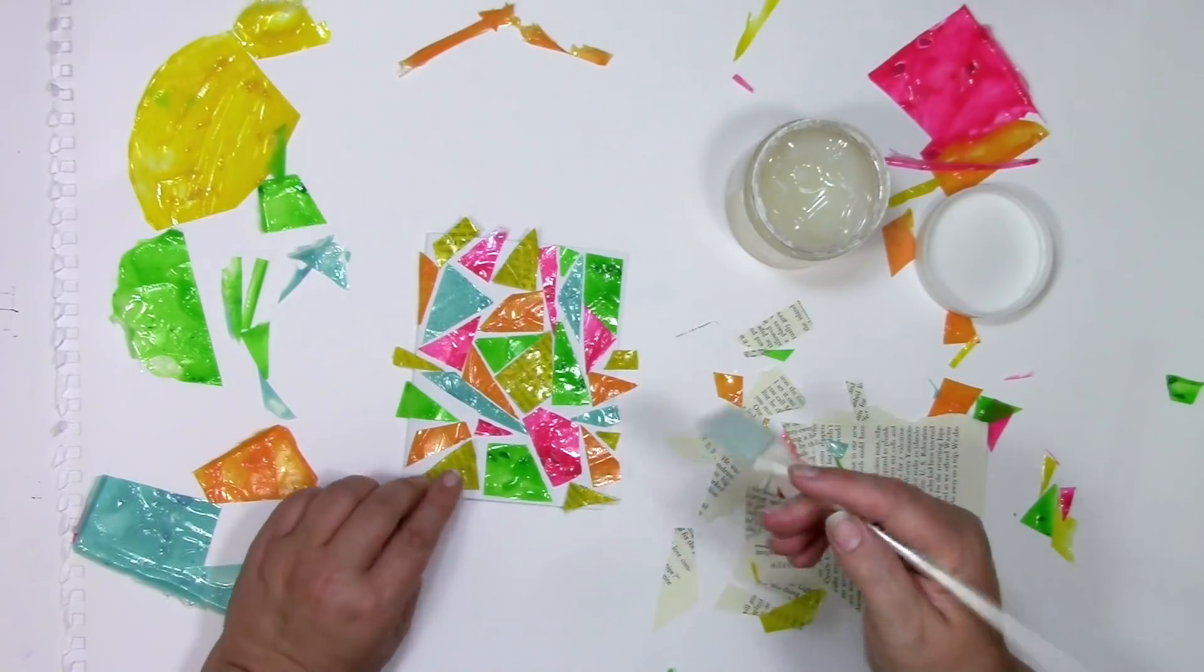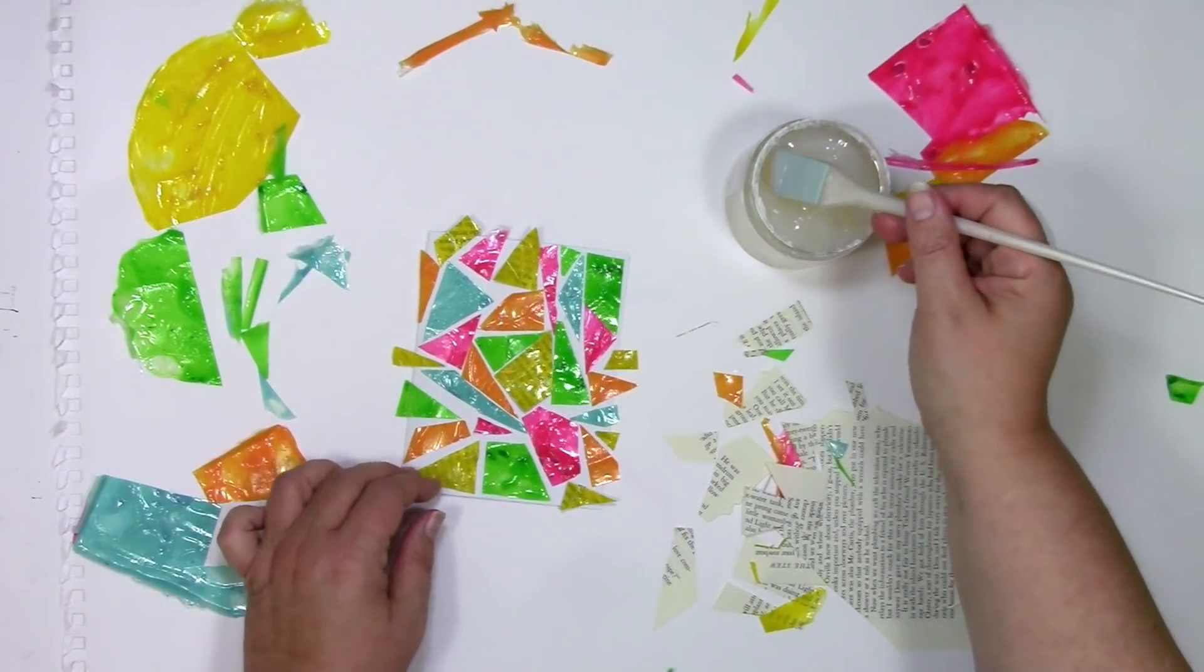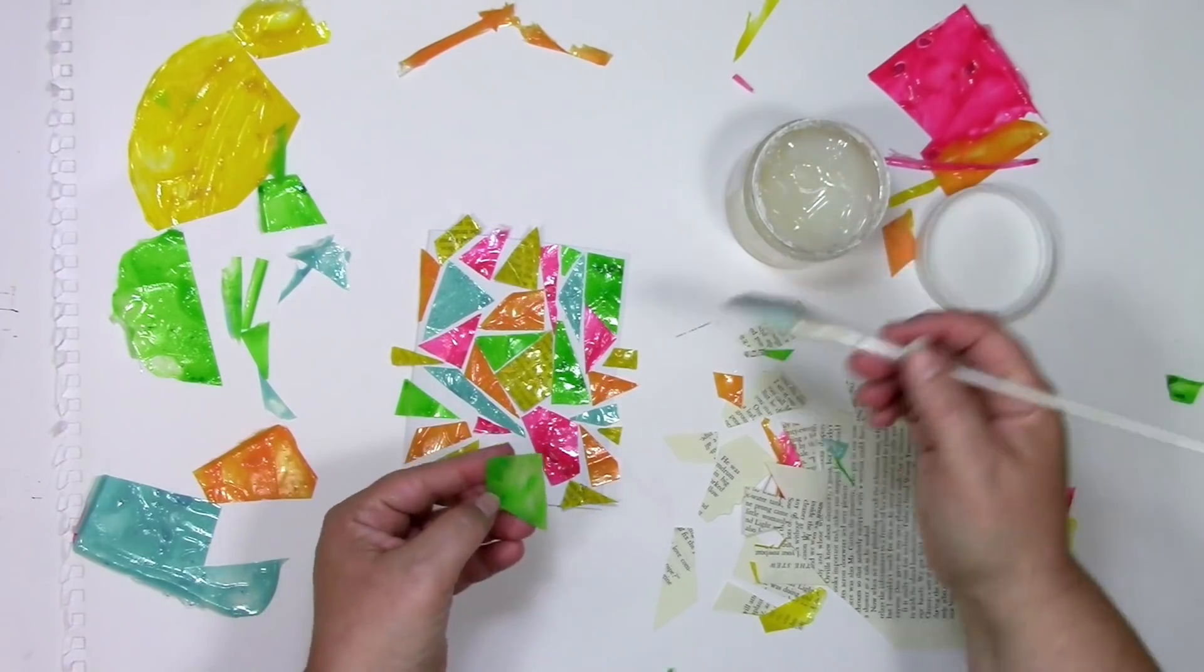And the silicone spatula is extremely handy for this. I'm just going to put some honey medium on there and glue each piece down. When I've got them all glued down, then there's just one last thing to do.